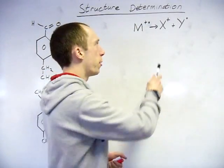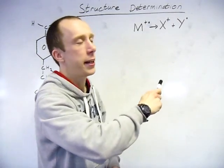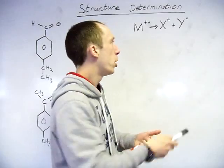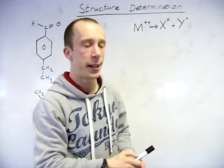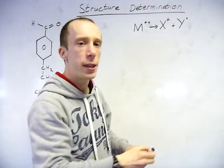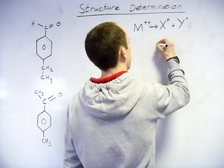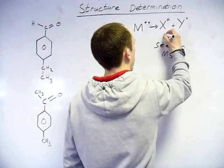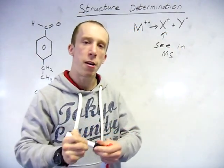So when this fragments, obviously we've got a positive cation on there and a free radical. So in terms of when it's split up, one side is going to take the cation charge and the other is going to take the free radical.